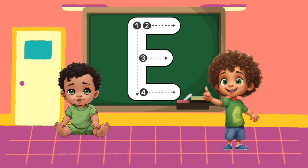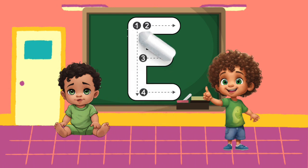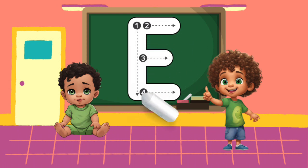Let's make the capital E. Draw a line down, then go back to the top and draw lines across at the top, the middle, and at the bottom.